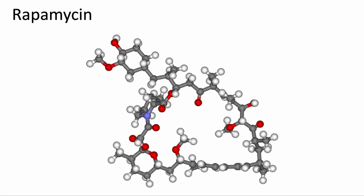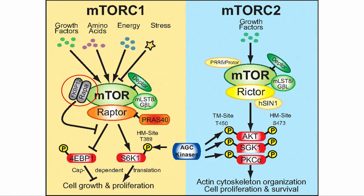Rapamycin is an approved drug that has been shown to extend lifespans in mouse models, and a few studies suggest that it may also promote healthy aging in humans. Rapamycin is an inhibitor of mTOR, which has wide-ranging effects on growth and metabolism across tissues. However, it remains unclear exactly how rapamycin affects longevity and diseases.